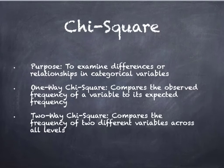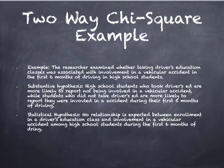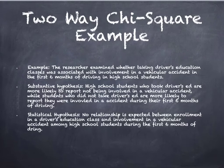Now to move on to chi-square. The purpose is to examine the differences in relationships in categorical variables. There are two different types of chi-square: a one-way chi-square, which compares the observed frequency of a variable to its expected frequency, or a two-way chi-square, which compares the frequency of two different variables across all levels. Students primarily do two-way chi-squares, so that's what's being presented here. The example: the researcher examined whether taking driver's education classes was associated with involvement in vehicular accidents in the first six months of driving in high school students. The substantive hypothesis: students who took driver's ed are more likely to report not being involved in a vehicular accident, while students who did not take driver's ed are more likely to report that they were involved in an accident during the first six months. The null hypothesis: no relationship is expected between enrollment in a driver's education class and involvement in vehicular accidents amongst high school students during the first six months.